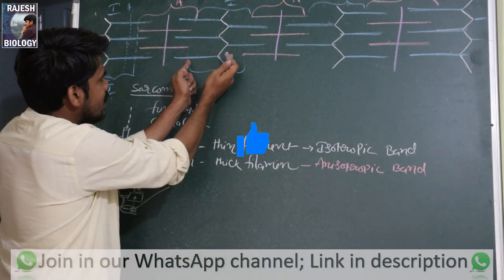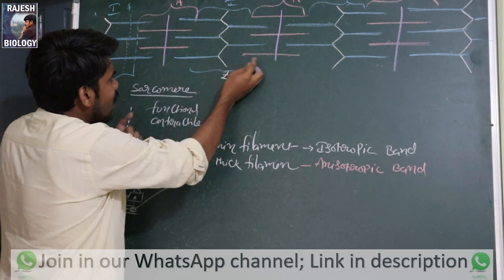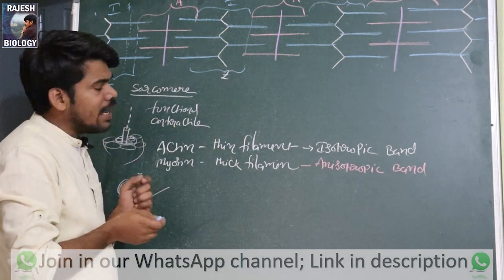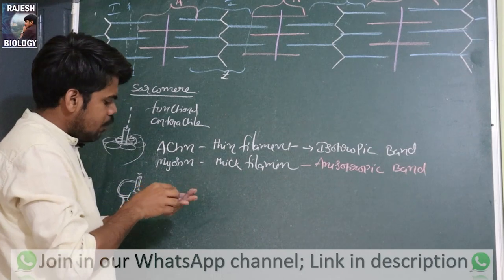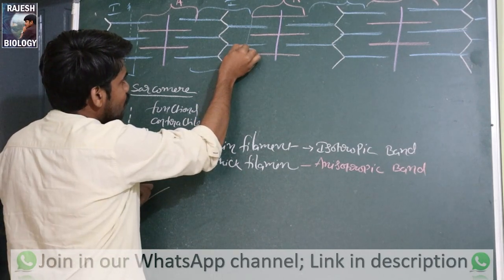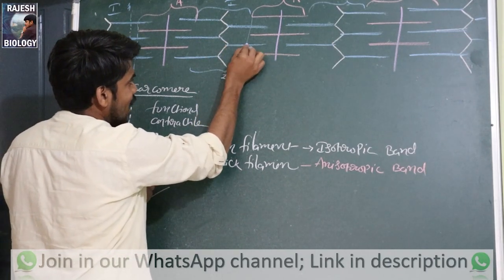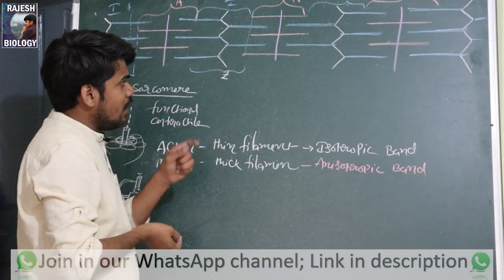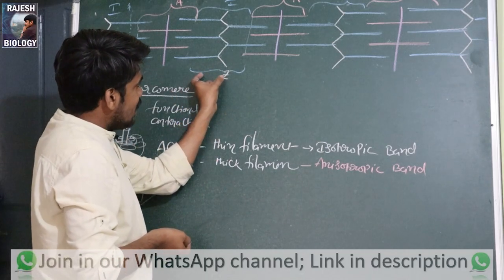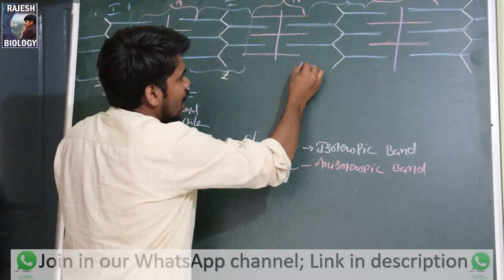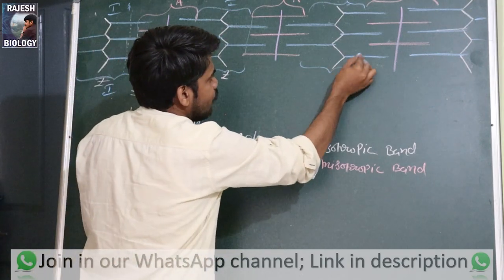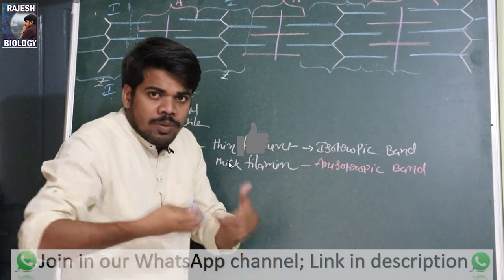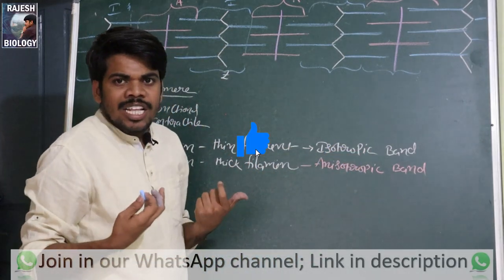Some portion of the actin filament is present in the I-band and the remaining portion is present in the A-band. So: I-band is the isotropic band which allows light, and A-band is the anisotropic band which absorbs the light — that is where myosin is present.